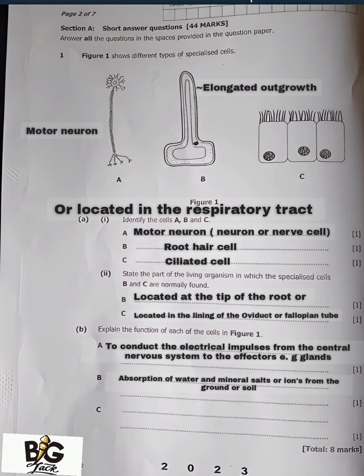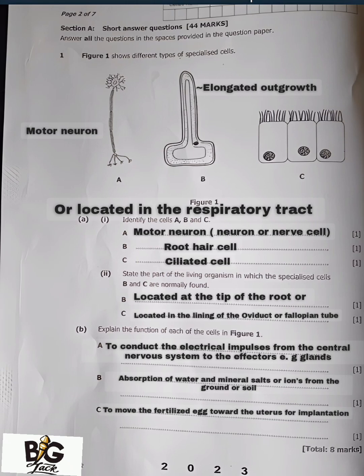C is the ciliated cell. In the context of the fallopian tube or oviduct, its function is to move the fertilized egg toward the uterus for implantation. Apart from that, the function of C is also to sweep out mucus containing dust particles or pathogens.